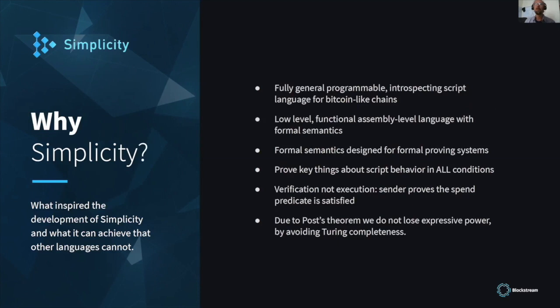It's a fully general programming language with introspection. It's UTXO model, so it's a soft-fork-compatible model for Bitcoin. Bitcoin already has the potential for multiple script versions, with SegWit, Schnorr, and Taproot introducing a new script versioning mechanism, which is slightly more flexible.